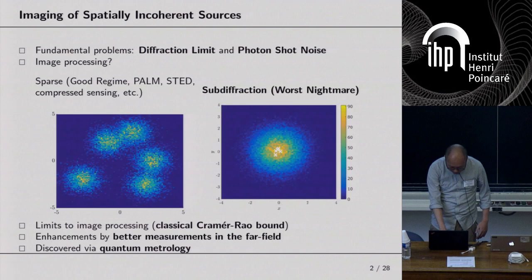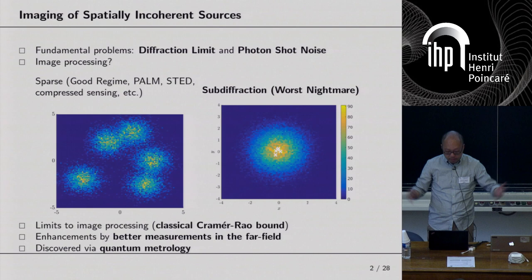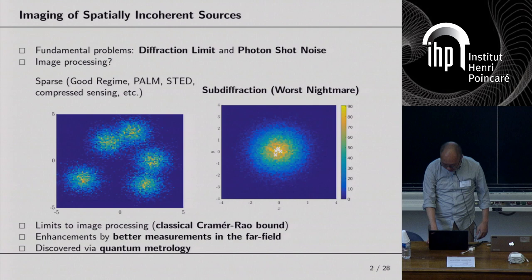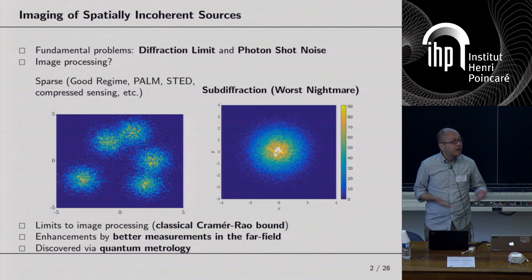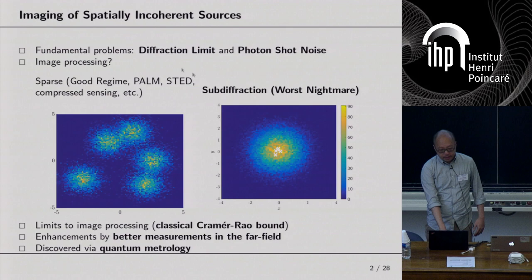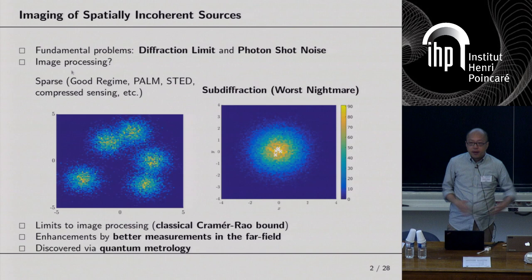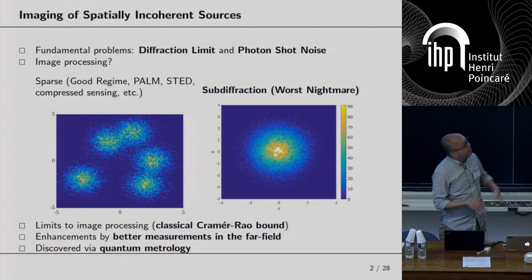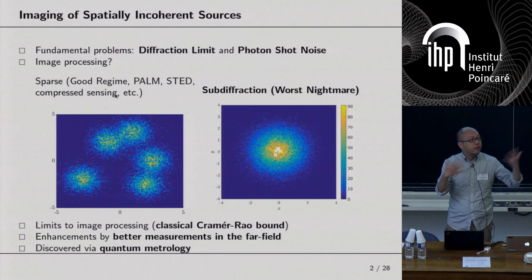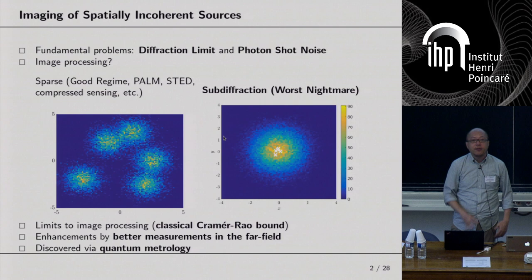Here's an executive summary. There are two fundamental problems when dealing with incoherent imaging. One is the diffraction limit, which blurs your image. The other is photon shot noise — the random arrival of photons on your CCD, which introduces noise. There are two basic regimes. One is the sparse regime: if you have sparsely populated point sources, you can win Nobel prizes by forcing into this regime using PALM or STORM, and you can do compressed sensing to retrieve the locations of these point sources.